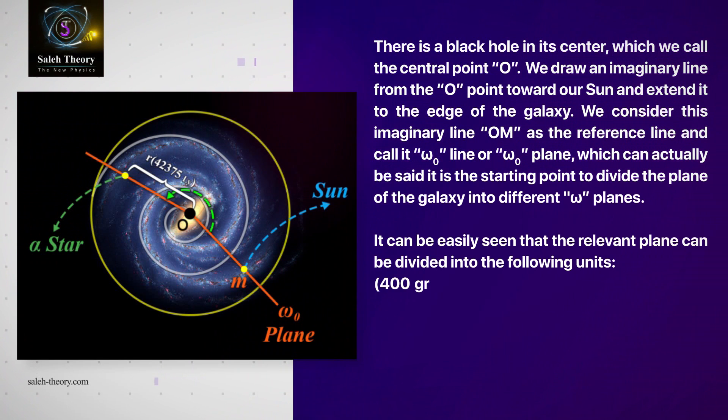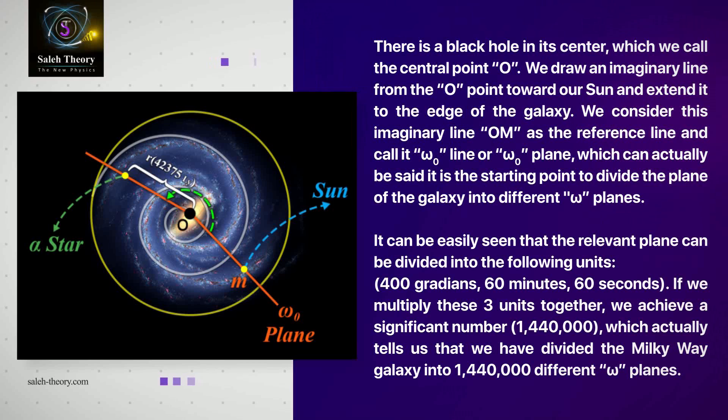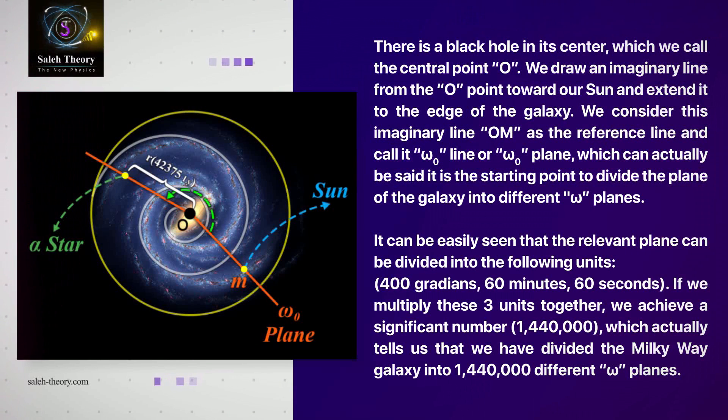There's a black hole in its center which we call the central point O. We draw an imaginary line from the O point toward our Sun and extend it to the edge of the galaxy.